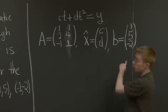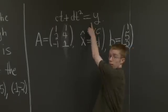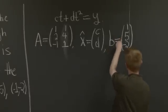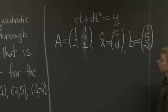Okay, and where did the b come from? Well, the b came from plugging in these points to the right-hand side. So 1, 5, and -2 are just the y-coordinates of these three points. Good.